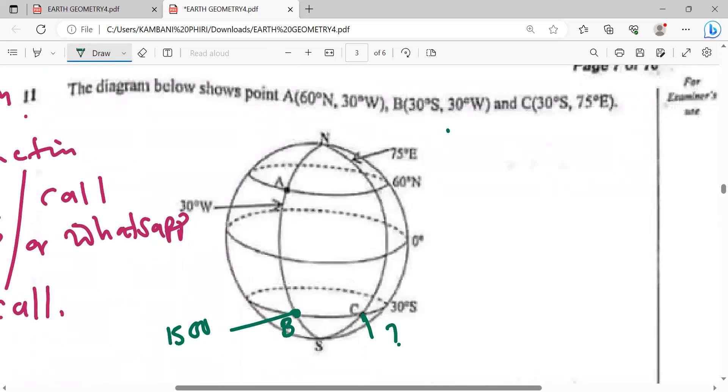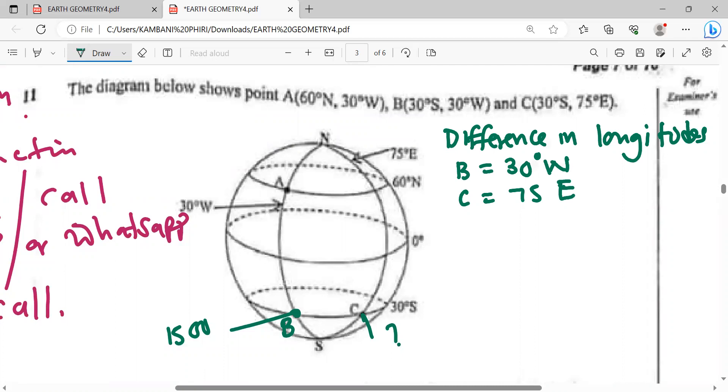When you look at these two, B is 30 degrees west, then C is 75 degrees east. They are on different sides of the prime meridian, so we are going to get the difference in longitude by adding.